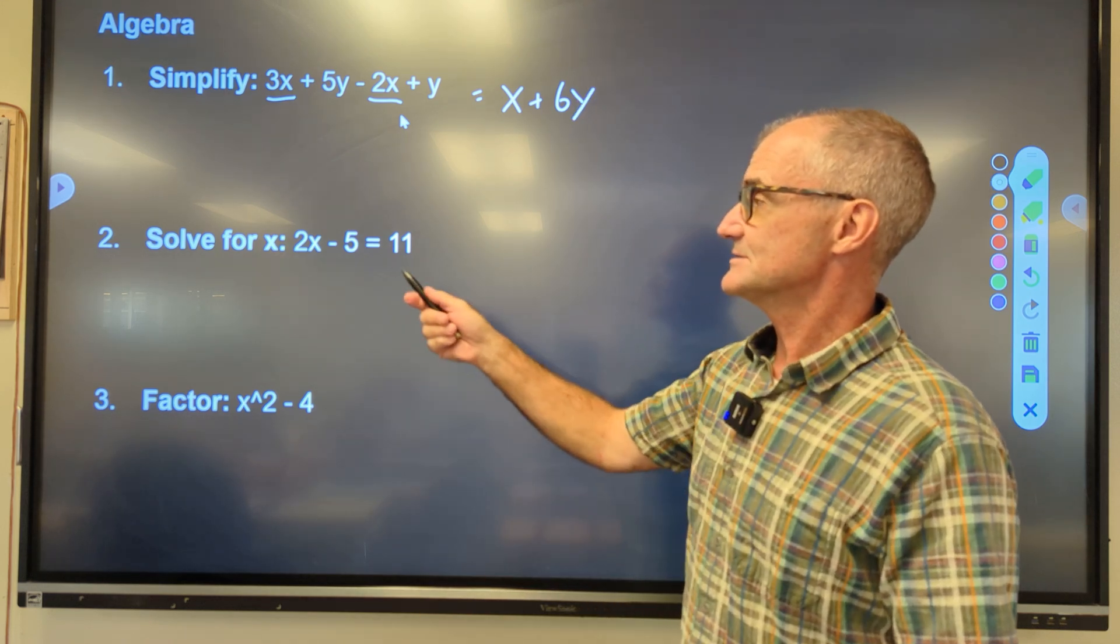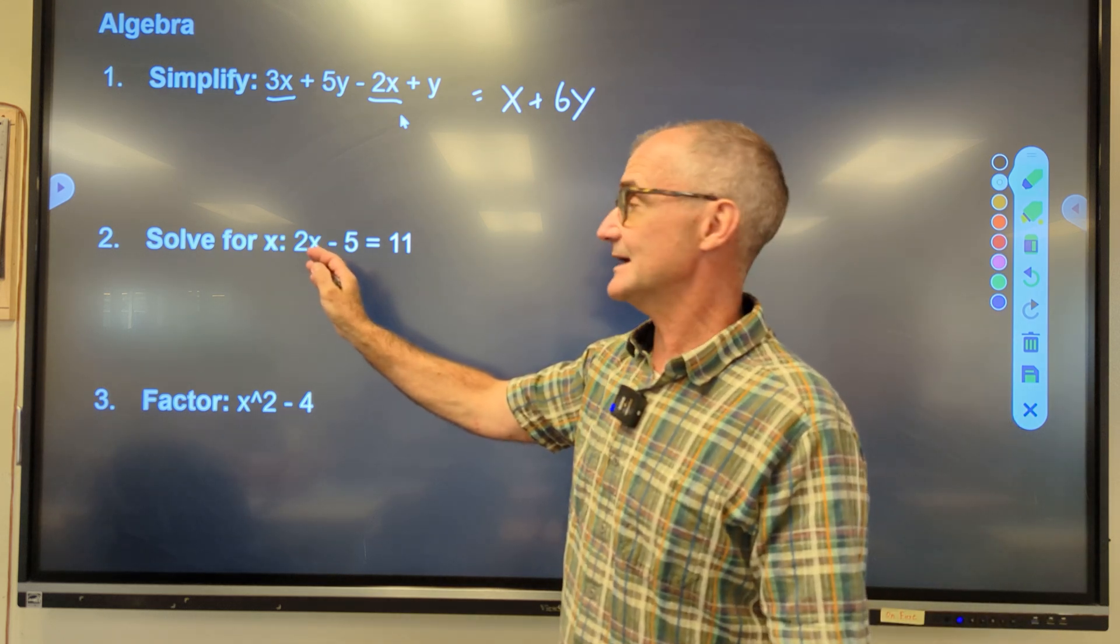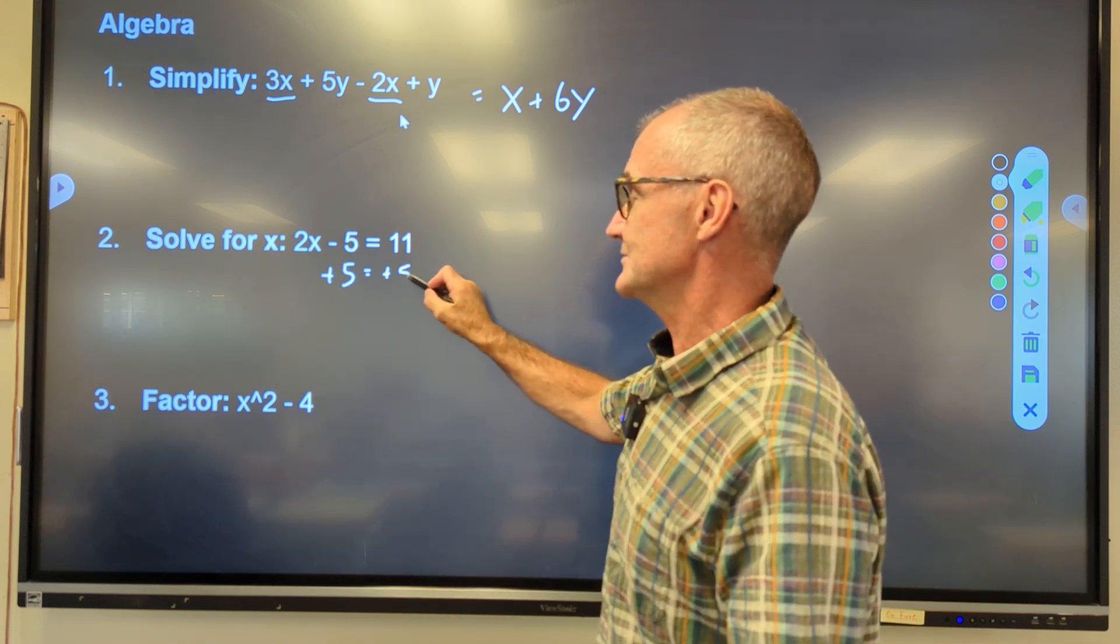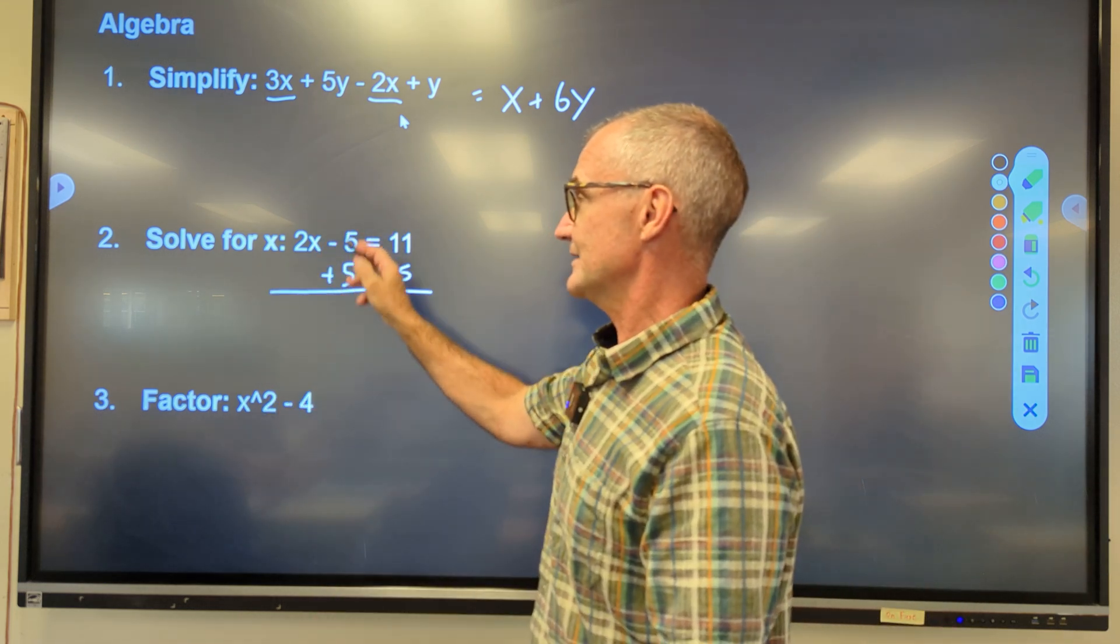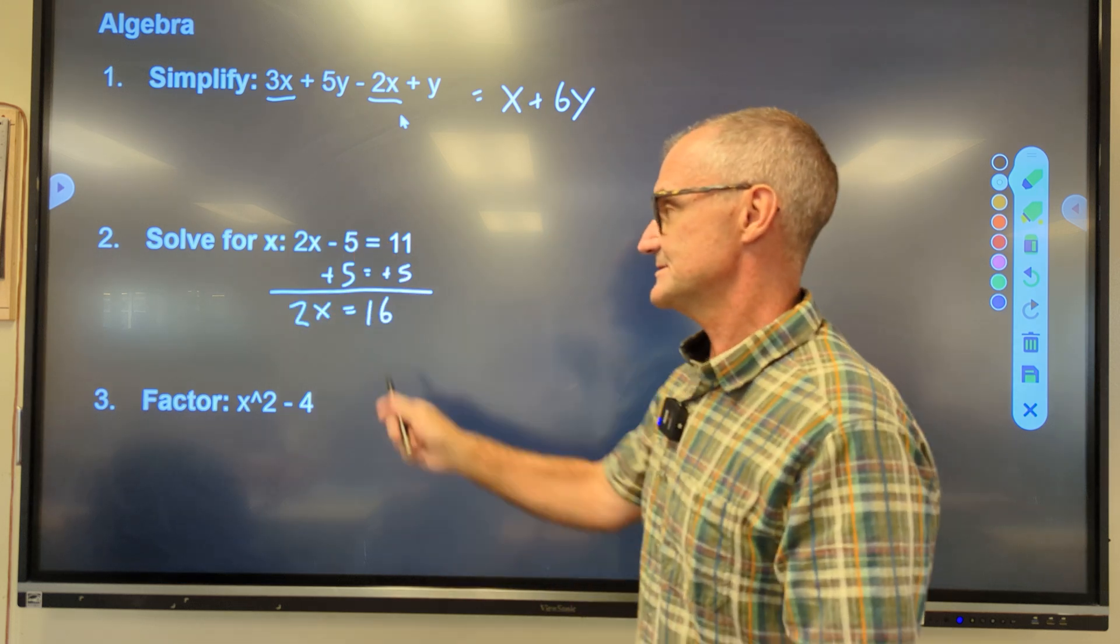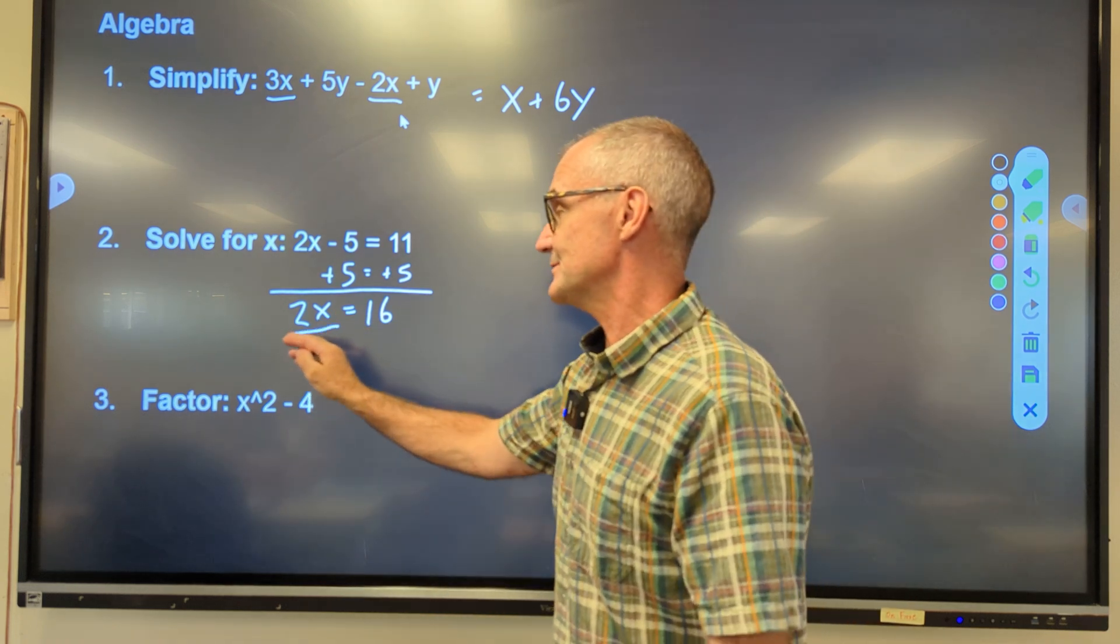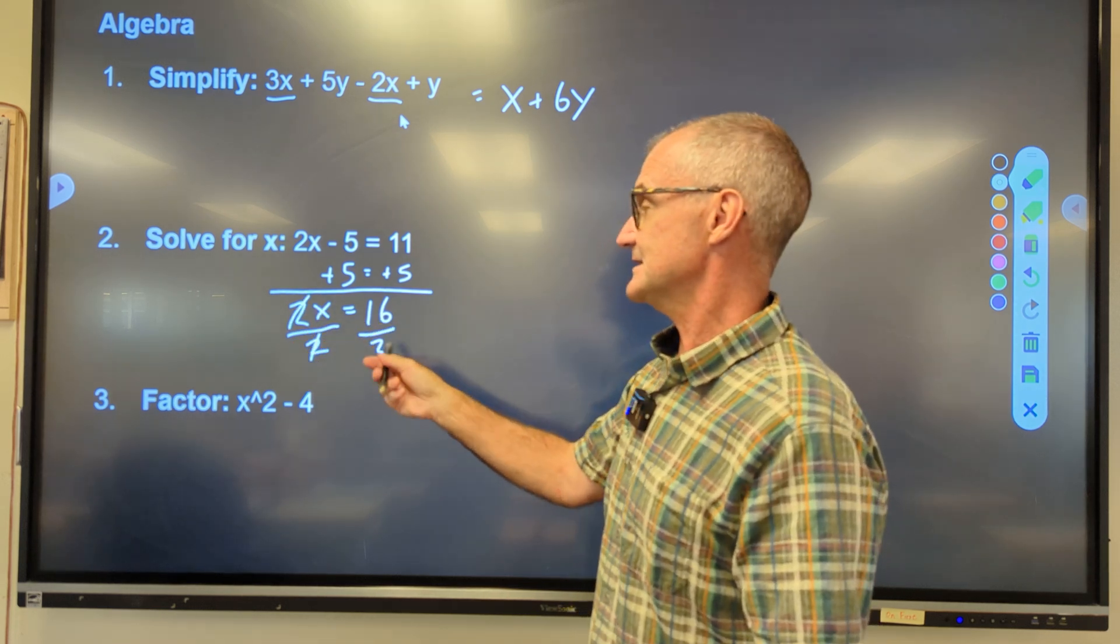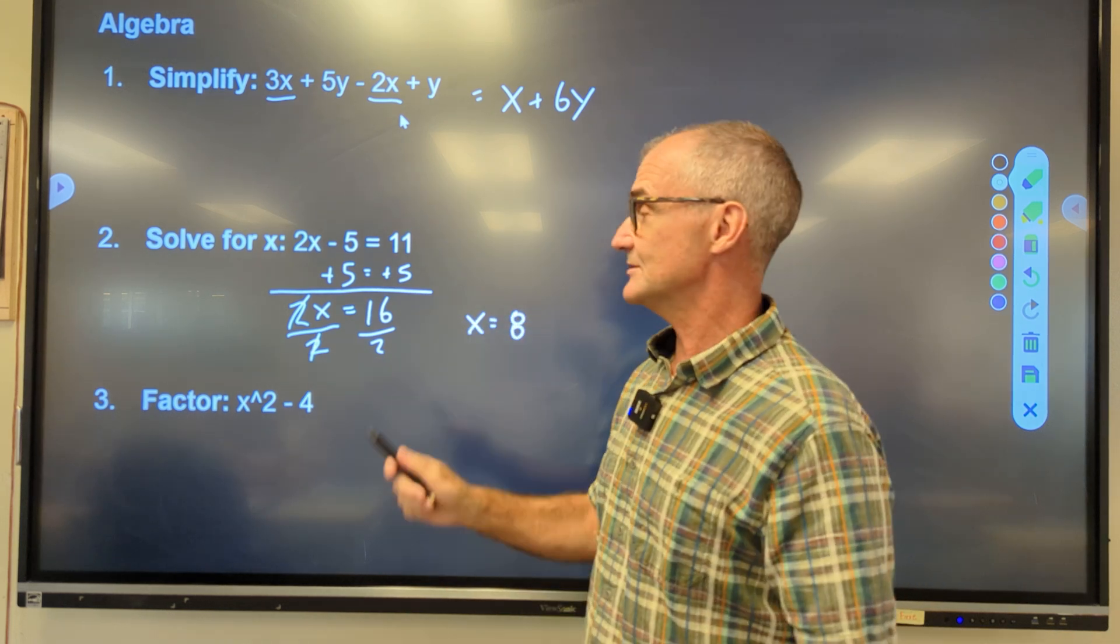Problem number two, solve for x. 2x minus 5 equals 11. The goal is to isolate that variable x, get it by itself. First thing I'm going to do is add 5 to both sides of the equation. I can do whatever I want as long as I do it equally to both sides of the equation. So negative 5 plus 5, those will cancel, giving me 2x equals 16. Still solving for x. The reverse operation of multiplication is division. I divide both sides by 2. That will now give me x by itself. 16 divided by 2, x is equal to 8.